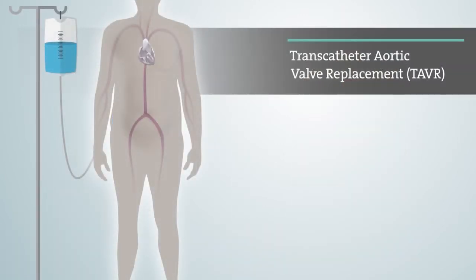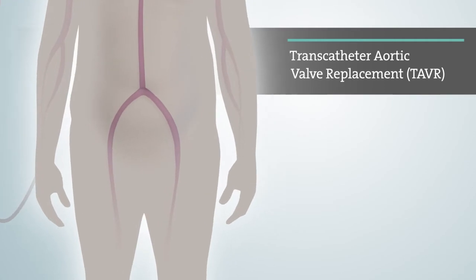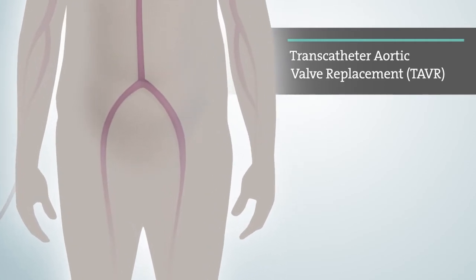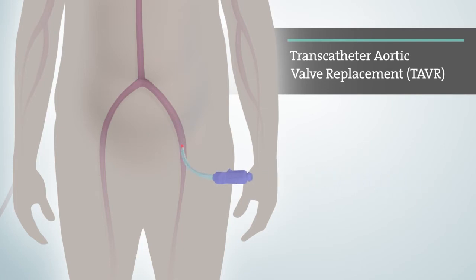During the TAVR procedure, you may be placed under anesthesia. Once under anesthesia, a small incision will be made in your leg, where your doctor will insert a short hollow tube, called a sheath, into your femoral artery.